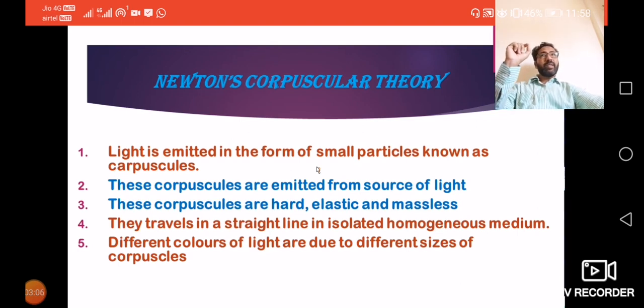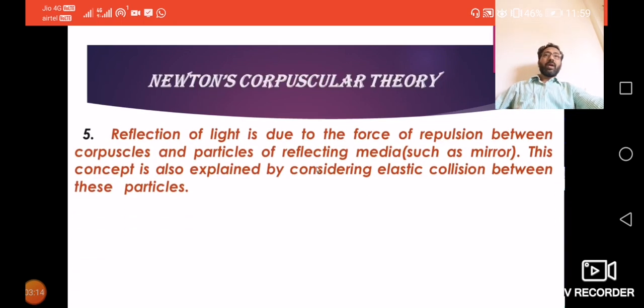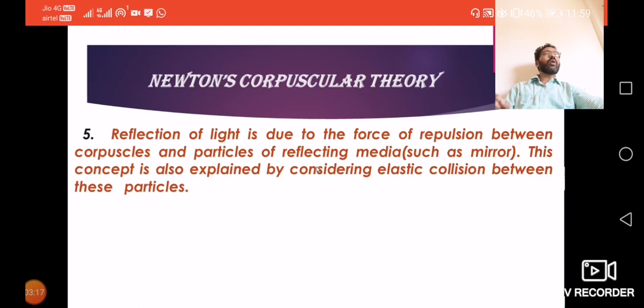As we know, there are different phenomena such as reflection. Reflection explain karne ke liye, Newton ne kya consider kiya. Reflection of light is due to the force of repulsion between corpuscles and particles of the reflecting medium, such as a mirror. The light particles and particles of the mirror repel each other. Ek particle idhar se aa raha hai - the light particle - and it is repelled by another particle. This concept we can consider by elastic collision between these particles. That is reflection - due to force of repulsion. This term you should remember correctly.